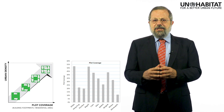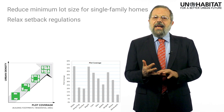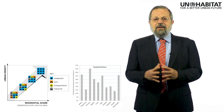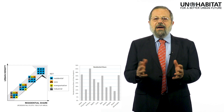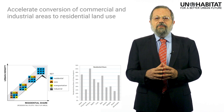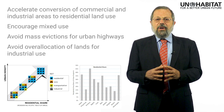We can increase plot coverage by removing or redesigning regulations that limit the share of residential plot area that building footprints can occupy — by reducing minimum lot sizes for single-family homes, relaxing setback regulations, allowing multiple units on single-family plots, and increasing allowable floor area ratios. Finally, we can increase residential share by increasing the share of residential and mixed-use areas in the city, limiting the loss of residential area to other land uses — by accelerating conversion of commercial and industrial areas to residential use, encouraging mixed use, avoiding mass evictions for urban highways, and avoiding the overall allocation of lands for industrial use.